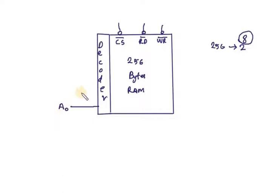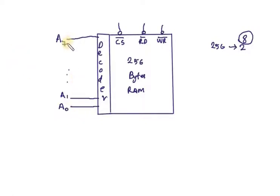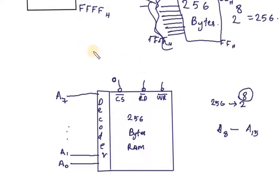A0, A1, A2, A3 up to A7 — so these are A0 to A7 connected to the 8085 microprocessor. For chip select, we use combinational logic. I am going to select A8 through A15 as the variable lines for the chip select decoder.